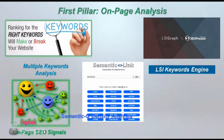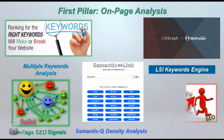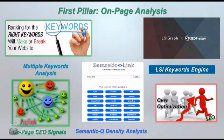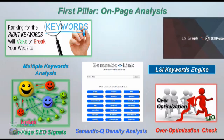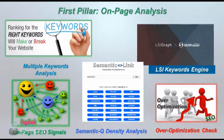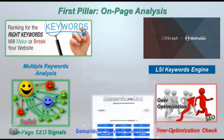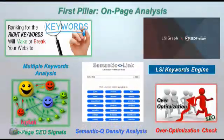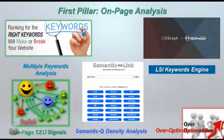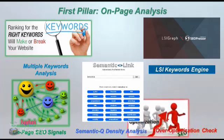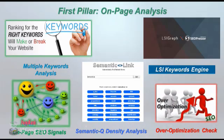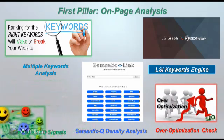SEO can be messy and confusing. There's the LSI Keywords Engine, an enhanced progressive engine powered by LSI Graph — you'll be able to tap the power of accessible keywords today. The semantic queue density analysis is a built-in analytic designed to tell you if your content is correctly related to your keywords.